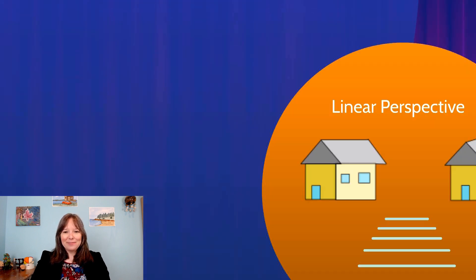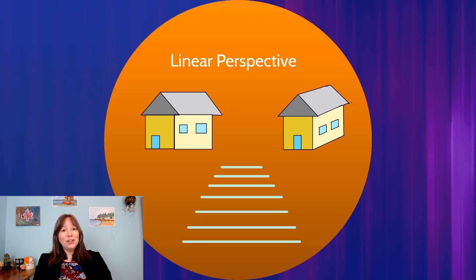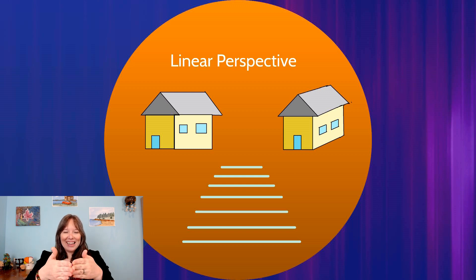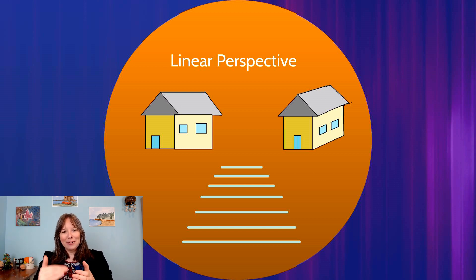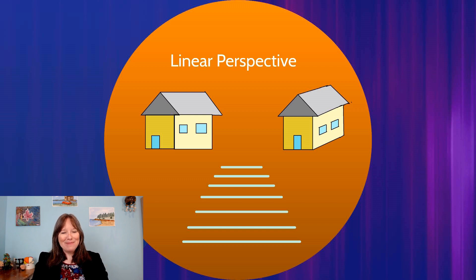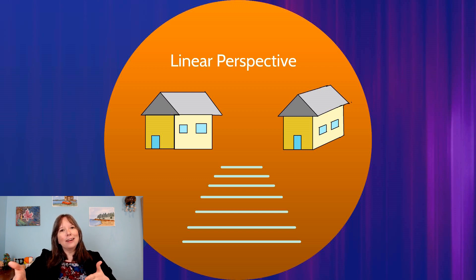Another monocular cue is linear perspective: converging lines, like railroad tracks, indicate that things are further away. A drawing of two houses illustrates this — one looks flat and lacks depth while the other, drawn with diagonal lines showing the sides, conveys more depth. Using linear perspective with diagonal lines helps create the impression of a three-dimensional cube or house.